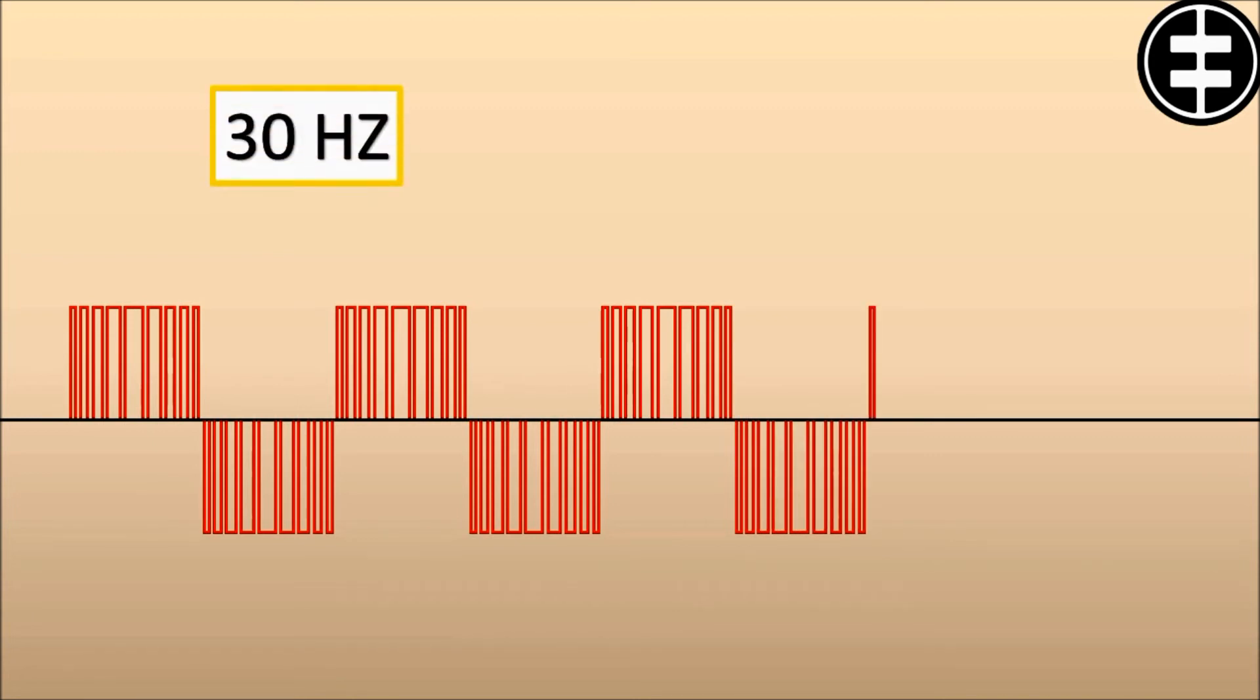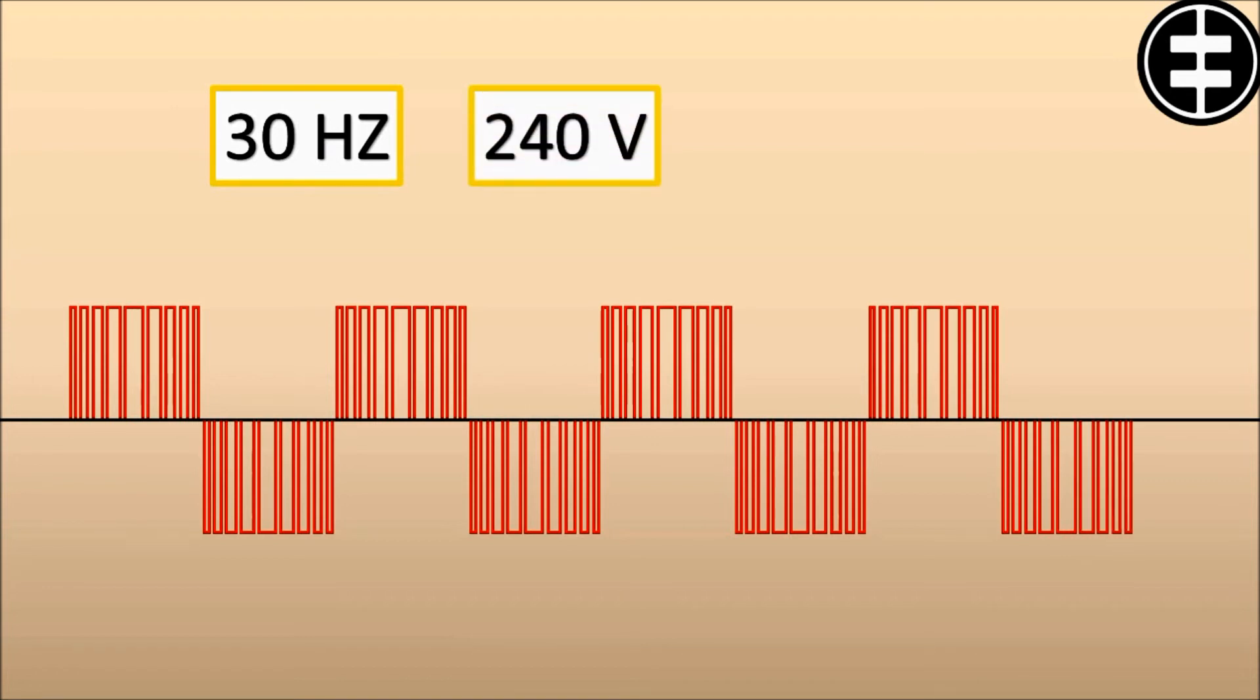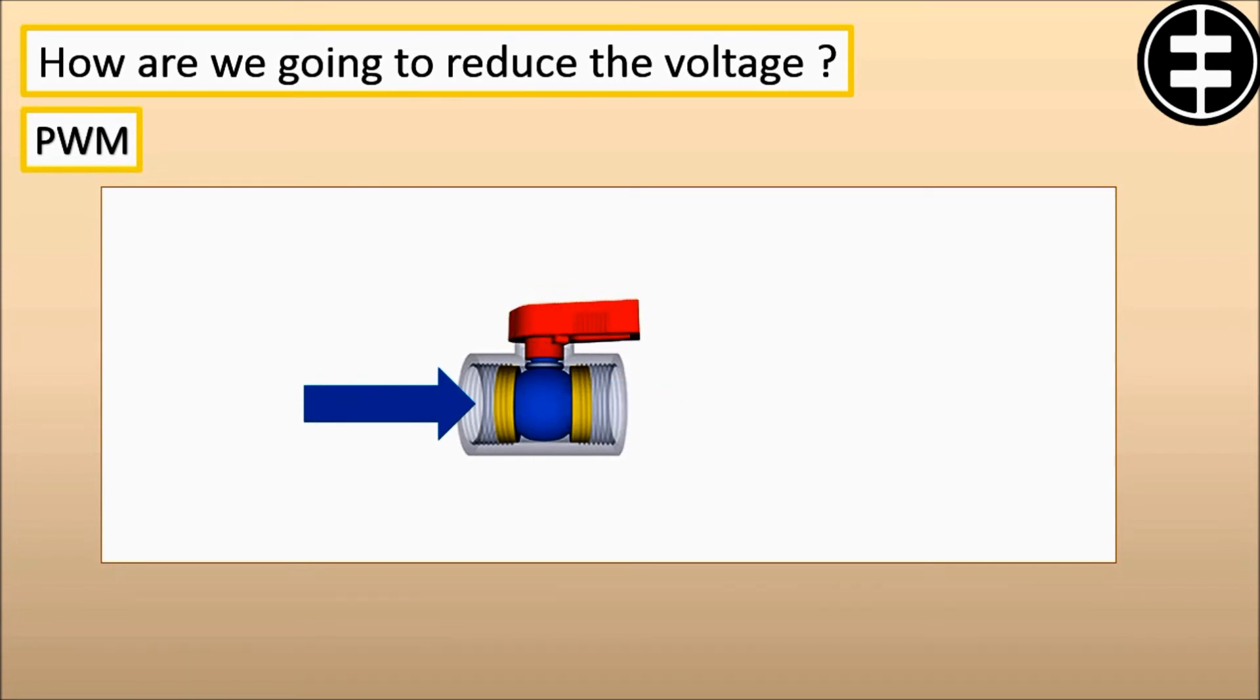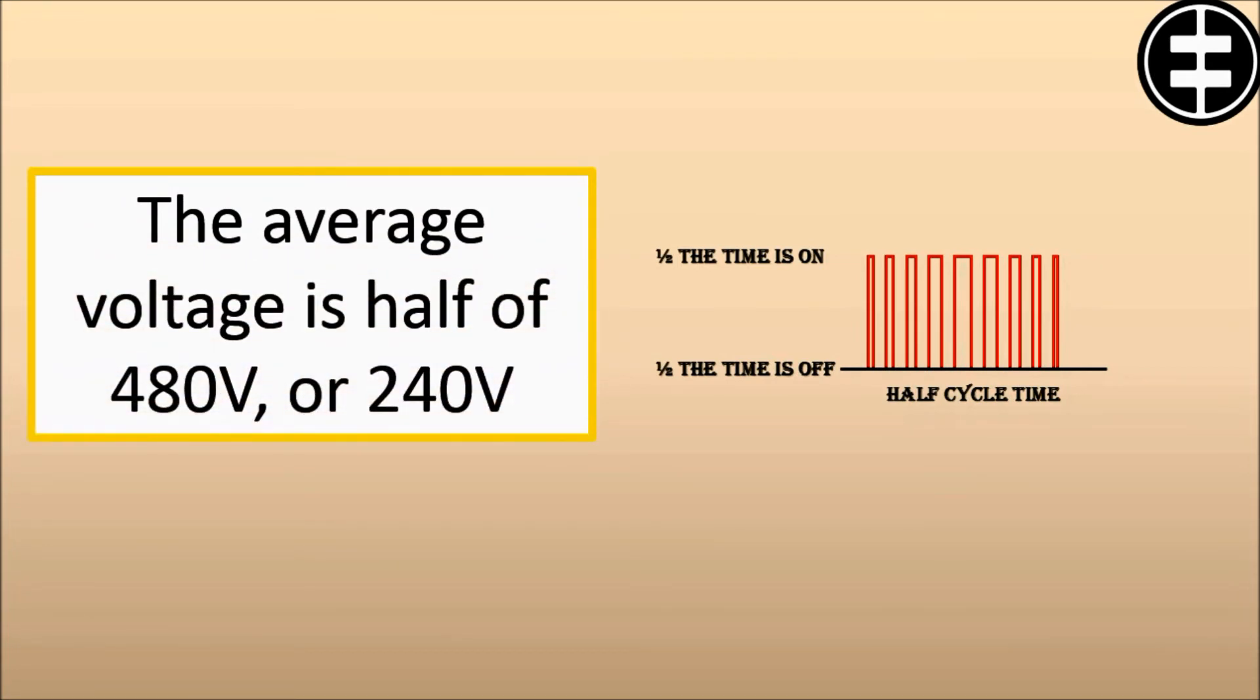But if we reduce the frequency to 30 Hz, then we must also reduce the voltage to 240 volts in order to maintain the V/Hz ratio. How are we going to reduce the voltage if the only voltage we have is 650 VDC? This is called Pulse Width Modulation or PWM. Imagine that we could control the pressure in a water line by turning the valve on and off at a higher rate of speed. While this would not be practical for plumbing systems, it works very well for VFDs. Notice that during the first half cycle, the voltage is on half the time and off half the time. Thus, the average voltage is half of 480 volts or 240 volts. By pulsing the output, we can achieve any average voltage on the output of the VFD.